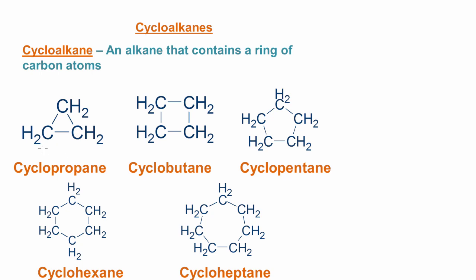In this case here we have cyclopropane which is composed of three carbon atoms that form a ring structure, and then each carbon is bonded to two hydrogen atoms.